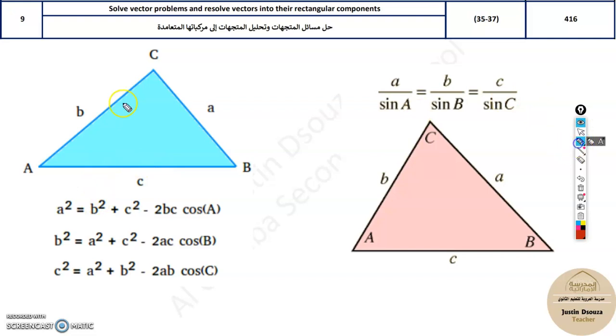If all the sides are known and no angle is known, law of cosines can help you find any of the angles. Or if two sides and the included angle is known, then the opposite side can be found out by law of cosines.